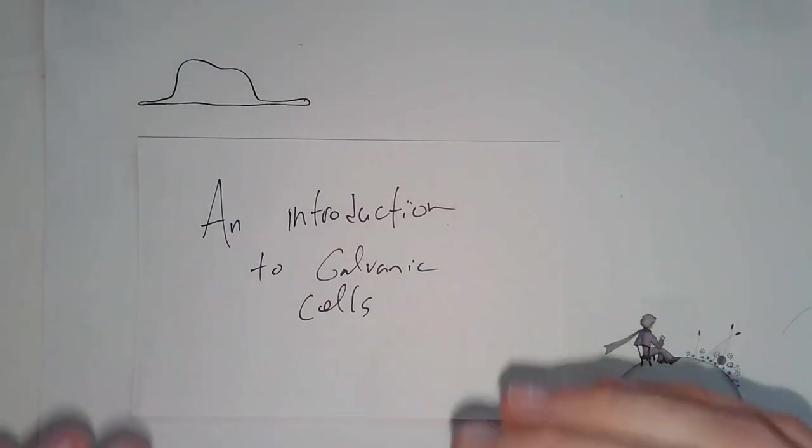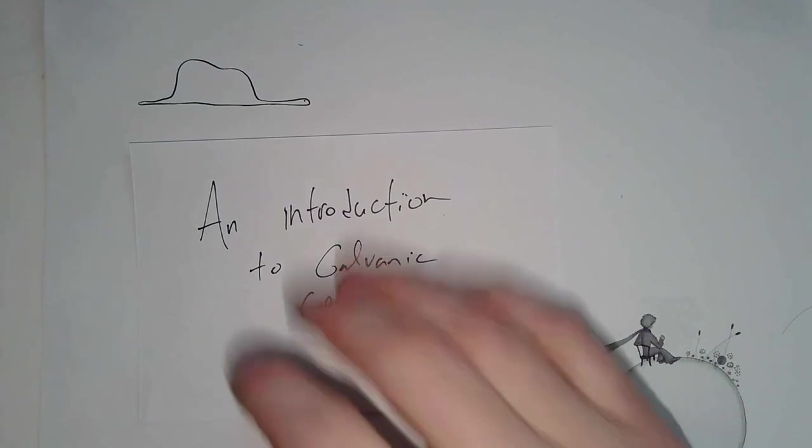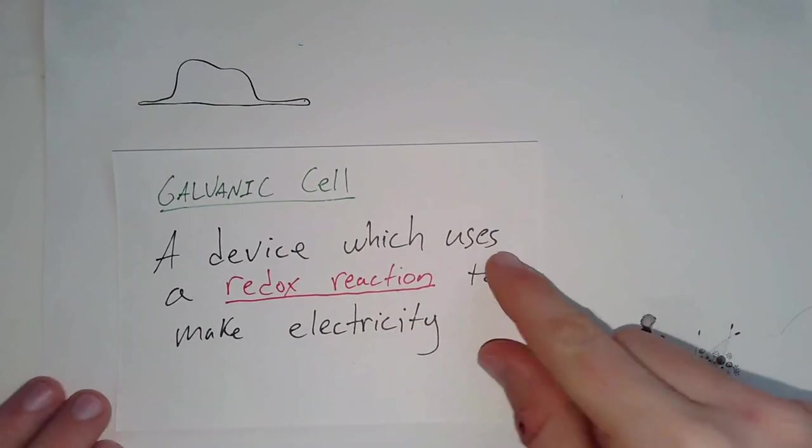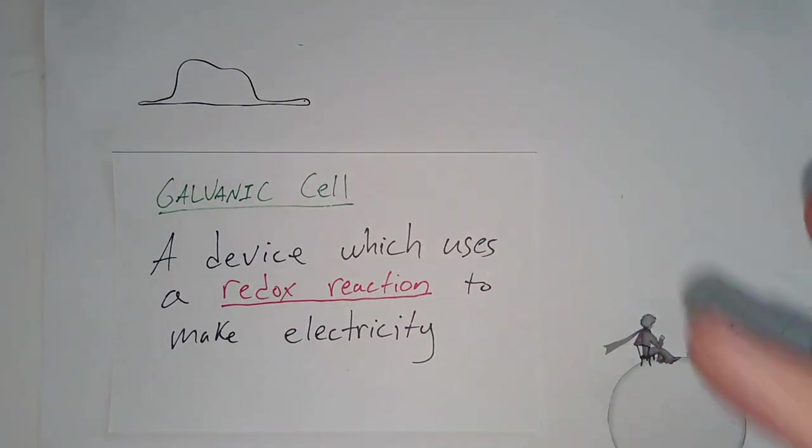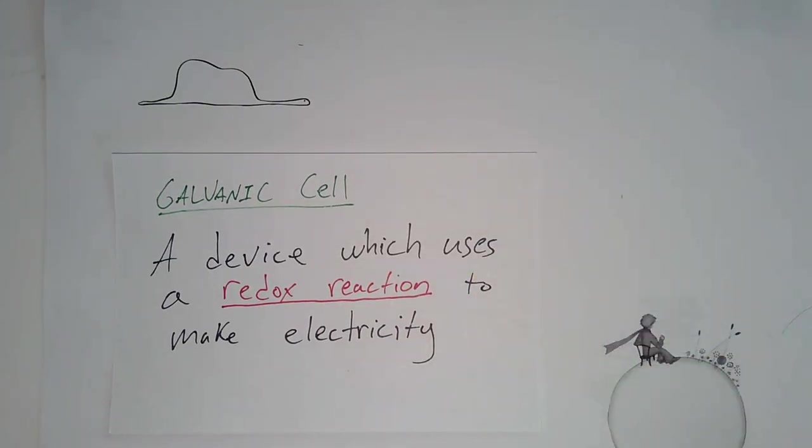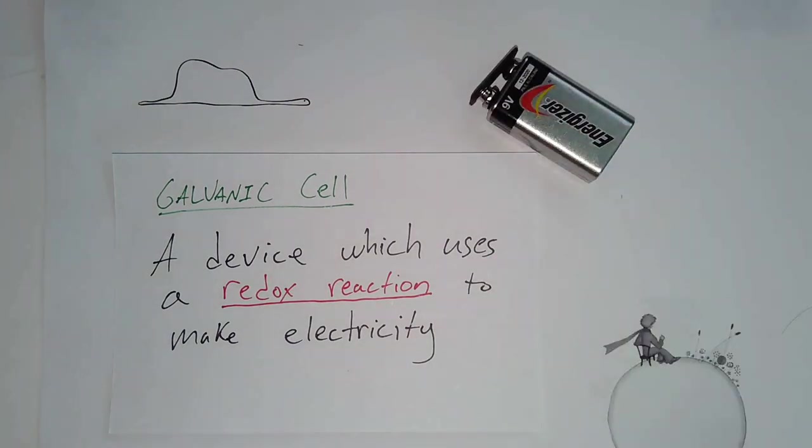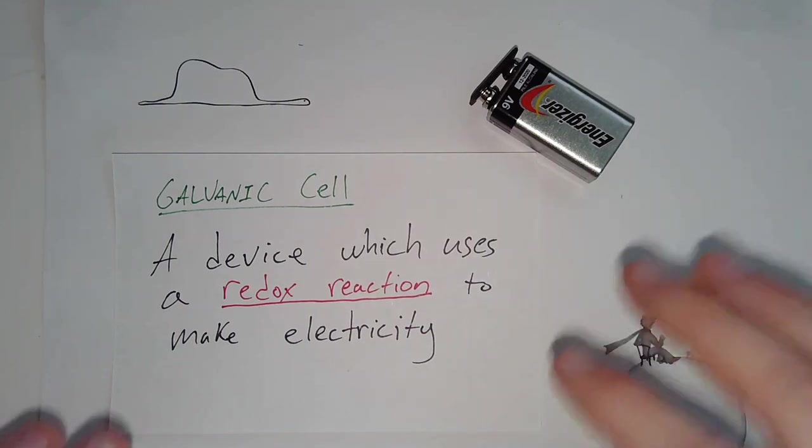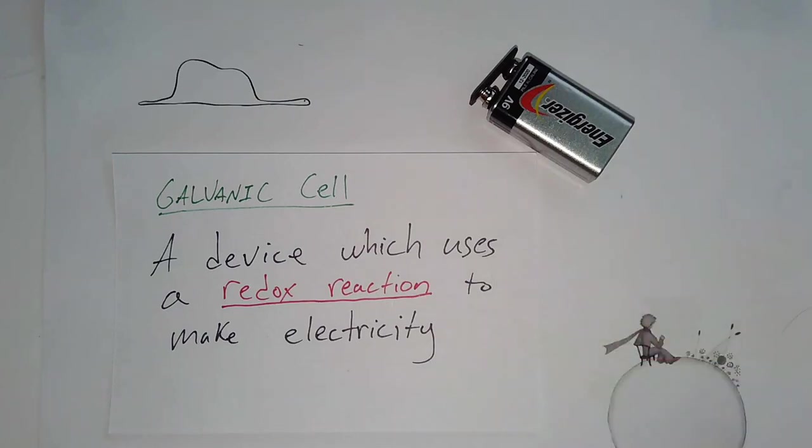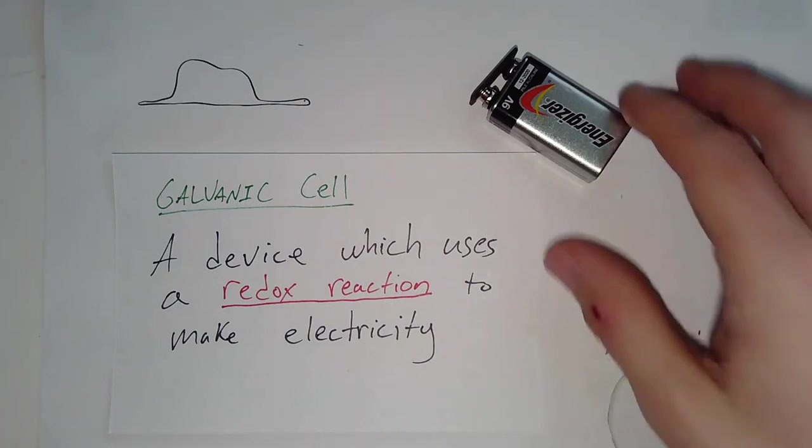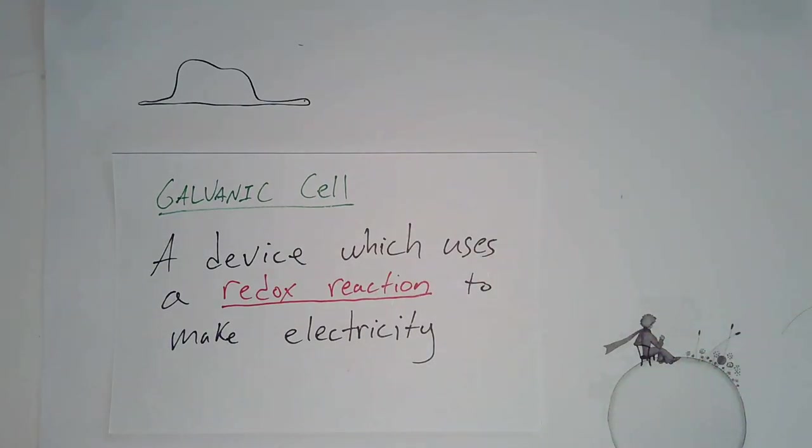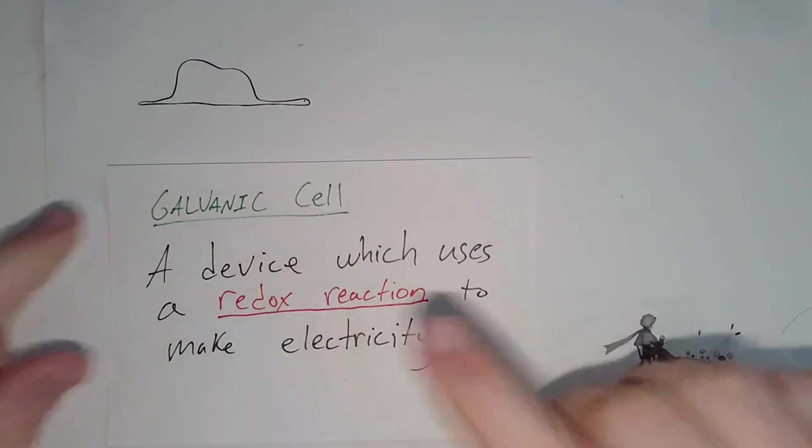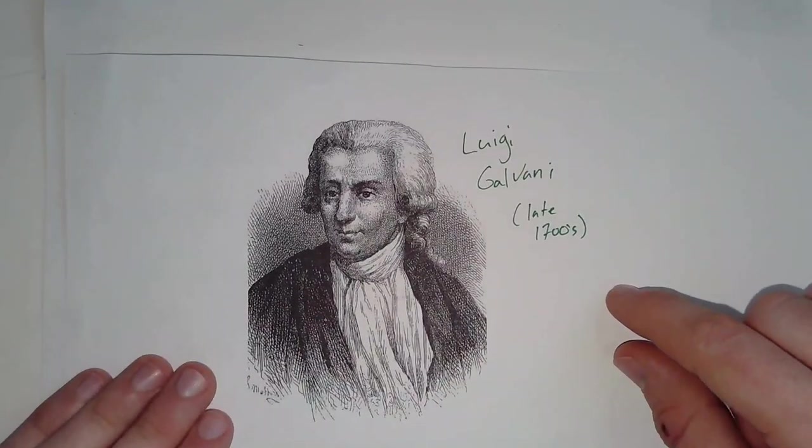So let's start off by defining this word galvanic cell, because that's definitely new to us. A galvanic cell is a device which uses a redox reduction to make electricity. So that sounds awfully familiar. That sounds a lot like battery. A galvanic cell is just another name, effectively, for a battery. Although to be fair, there are galvanic cells in chemistry that aren't batteries. Rustine is actually a good example. But it's one where we're going to use redox to make electricity. And my guess is the word galvanic is new to us, except maybe in the word galvanized.